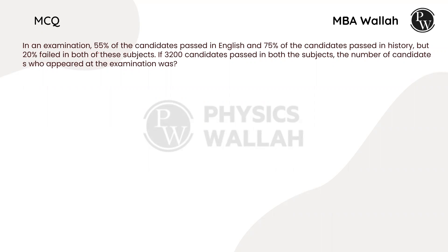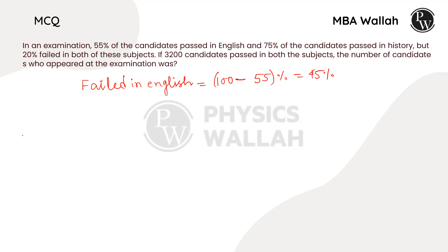Candidates failed in English is equal to 100 minus 55, which is equal to 45%. Failed in history is equal to 100 minus 75%, which is equal to 25%. Candidates failed in both subjects is equal to 20%.